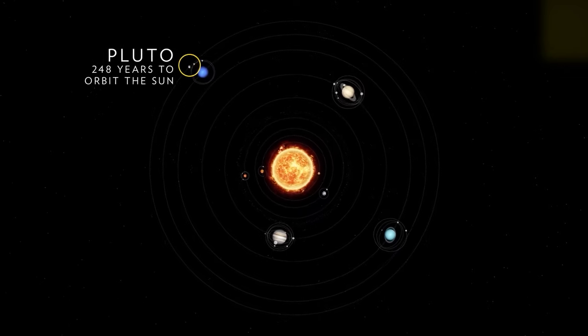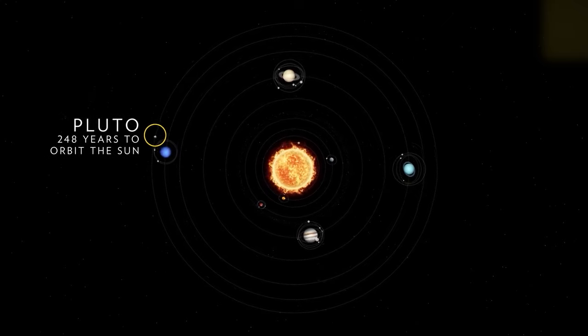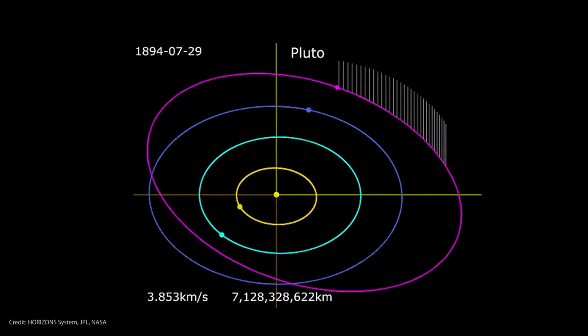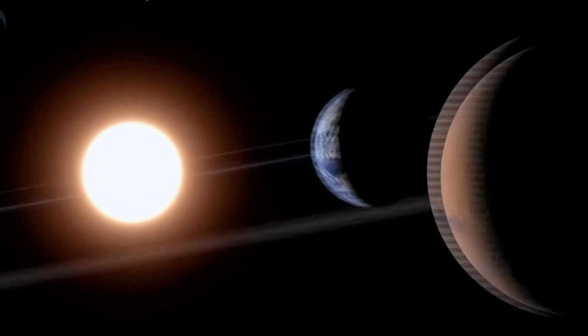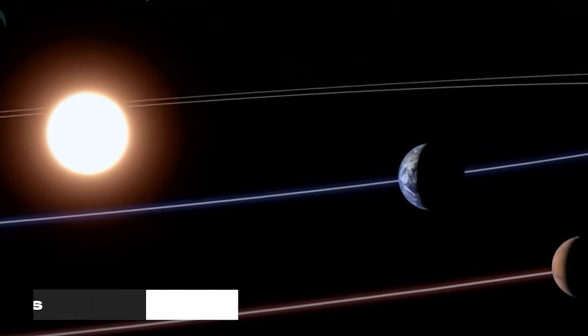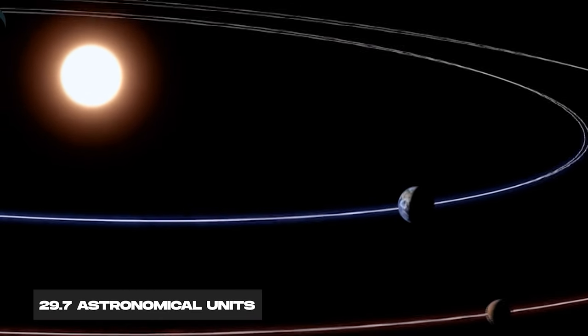Pluto's elongated orbital trajectory results in an extended orbital cycle. Notably, in 1989, it achieved its closest approach to the sun, reaching a distance as near as 29.7 astronomical units from our star.